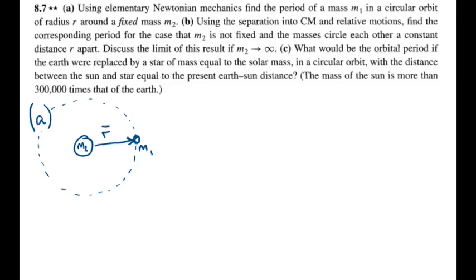In this video I'll be solving problem 8.7 from Taylor's classical mechanics. Part A asks us to use elementary Newtonian mechanics to find the period of a mass m1 in a circular orbit of radius r around a fixed mass m2 as seen in the diagram.